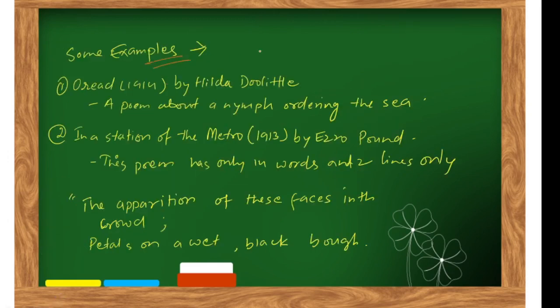Some examples of Imagist poetry: 'Oread' from 1914 by Hilda Doolittle, a poem about a nymph ordering the sea.